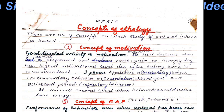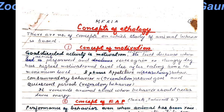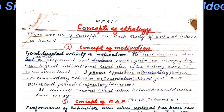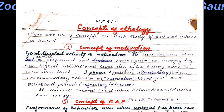The searching stops and another phase of motivation begins — the consummatory phase, also called orientation. If we wish to define this second stage, it is the period of response immediately following the appetitive or searching behavior.